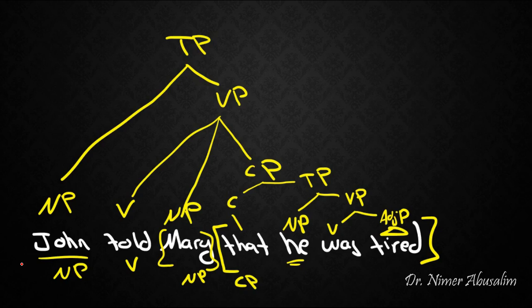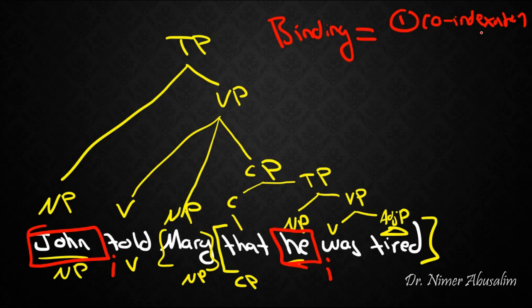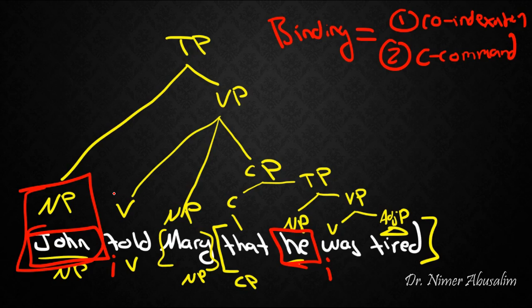Now our concern was to see if John binds he. So if we give it the same index, I and I, then co-indexation will be fulfilled. Now all we need is c-command. Does the NP here c-command the NP he? Let's see. We go up once, and now we can go down as much as we want. So we go down through here, and here, and here, and here. So yes, John binds the NP he, because they're co-indexed, and John c-commands the pronoun he.